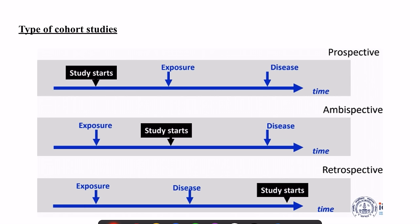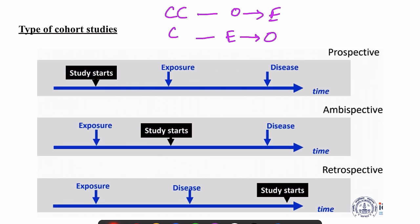Moving to types of cohort studies. In the first part we saw the difference between case-control and cohort. In case-control, we start from the outcome and look back at the exposure. For cohort studies, we start from exposure and look for the outcome. The basic difference is: if you start from outcome, that is a case-control study; if you start from exposure, that is a cohort study.